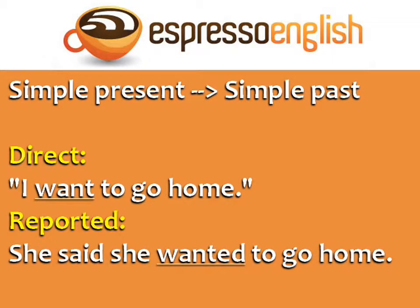Verbs in the simple present become verbs in the simple past. Direct: 'I want to go home.' Reported: 'She said she wanted to go home.'